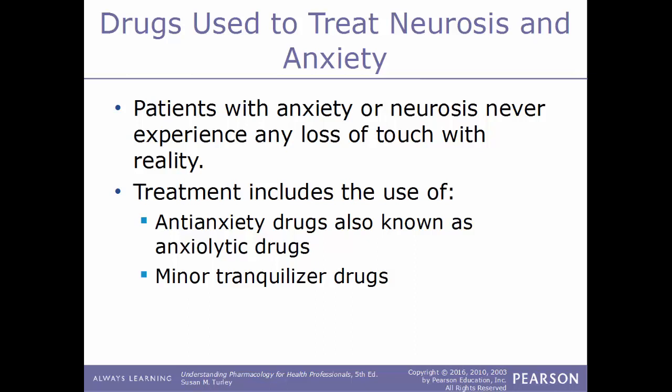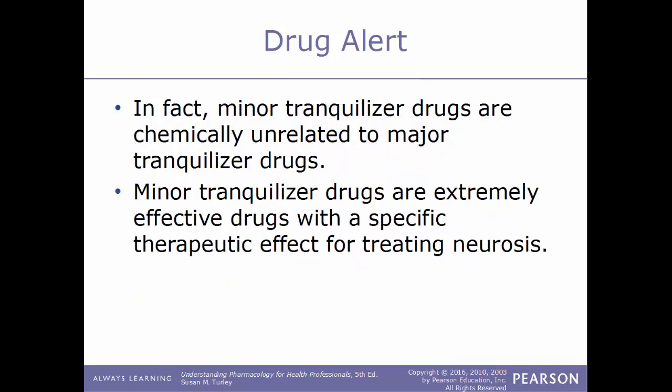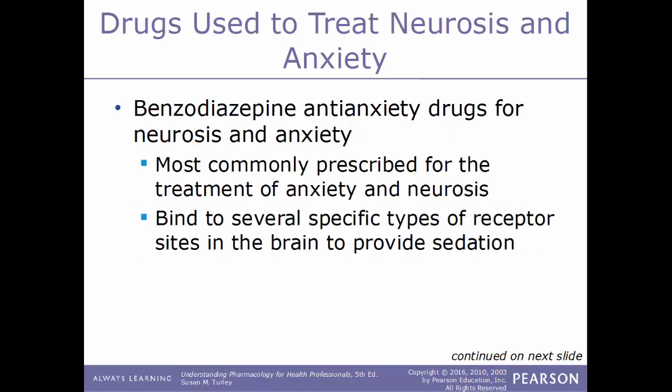Treatments for neurosis and anxiety include the use of anti-anxiety drugs, also known as anxiolytic drugs. Another term is minor tranquilizer drugs. The phrase 'minor tranquilizer' is somewhat of a misnomer because it implies this class is less effective than a major tranquilizer, or that minor tranquilizers are just major tranquilizers at a lower dose — neither of which is true. In fact, minor tranquilizers are chemically unrelated to major tranquilizers and are extremely effective drugs with a specific therapeutic effect for treating neurosis.